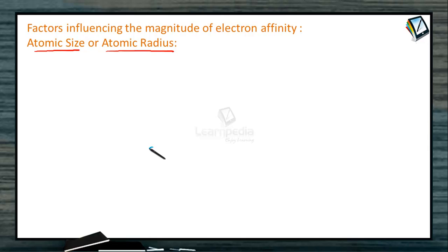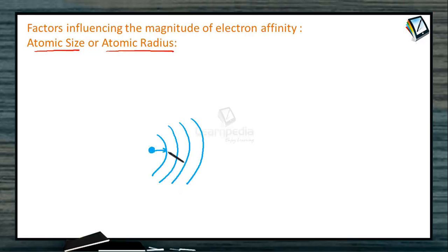That means, consider this is the nucleus and these are various shells in the atom. With the increase of size of an atom, the attraction of the nucleus on valence electrons will decrease. So the incoming electron added to the outermost shell has less attraction toward the nucleus, and when it has weak attraction, the electron gain enthalpy is less for the corresponding process.